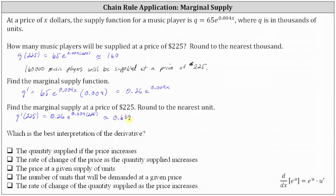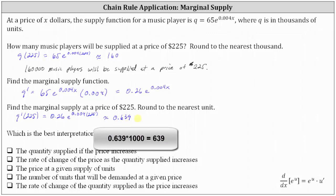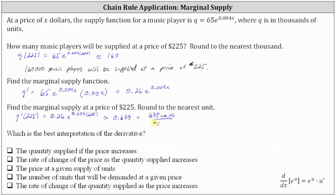This is a rate of change — specifically the rate of change of the quantity supplied with respect to the change in price. Because q is in thousands, 0.639 represents 639 units per one dollar increase in price. As a fraction, 0.639 over 1, the numerator represents the change in quantity and the denominator represents the change in price. So the supply increases by 639 units as the price increases by one dollar, right when the price is 225 dollars.